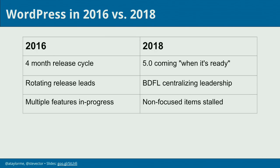Drupal, back in 2016, had just adopted an every-six-month cycle and it was starting to go well — two years later, I think it's going really well. WordPress is now in the mentality that the next major release, 5.0, will be released when it's ready, not on a four-month cycle. 'When it's ready' sounds familiar to a Drupal audience, remembering the way Drupal 8 worked. Also, power has gotten a little more concentrated on the WordPress side.